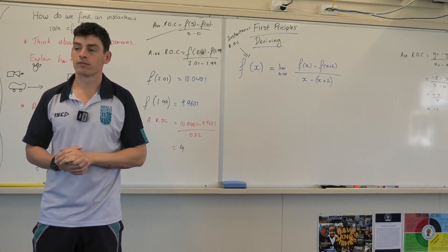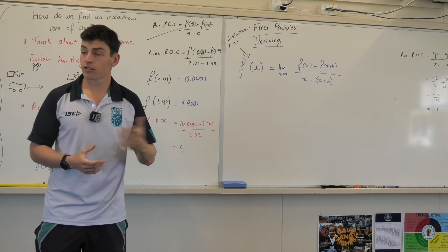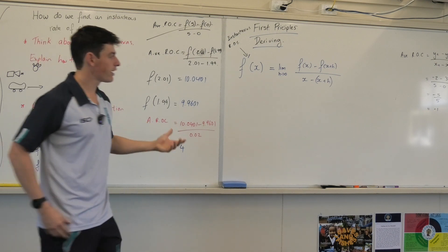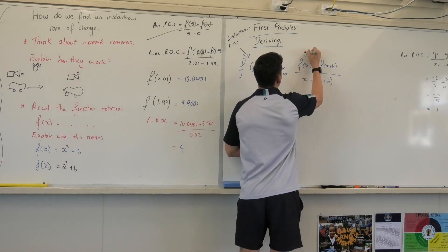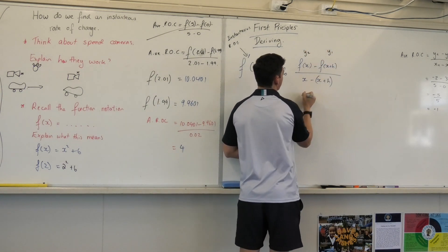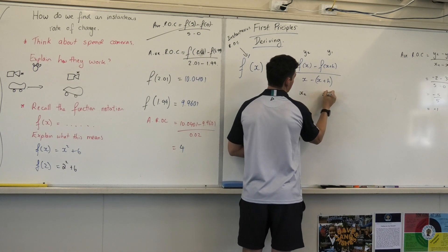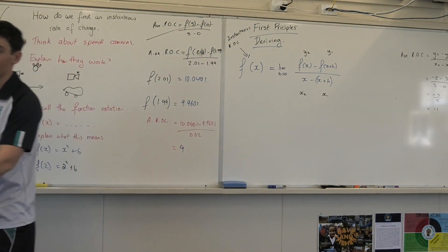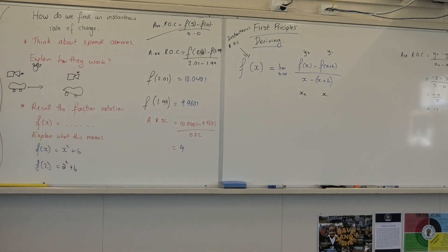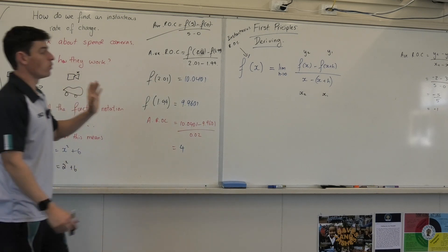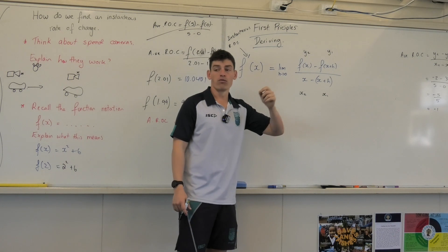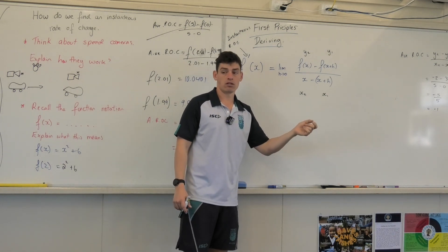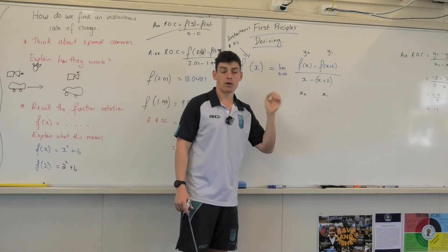It is the gradient formula. It is the gradient formula. That's a good observation. This is y2. This is y1. This is x2. And this is x1. It is the gradient formula, which is our average rate of change. So that is our average rate of change. And all we're saying is I want the difference between my current point and some point really, really close to it. Are we cool with that?